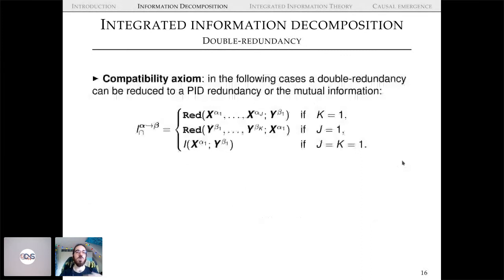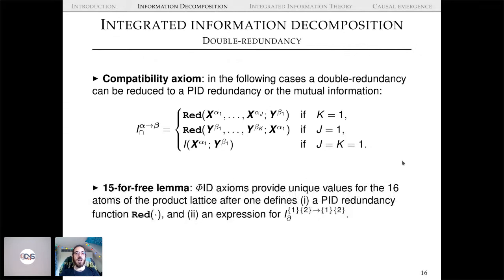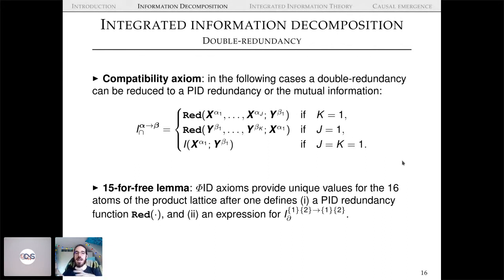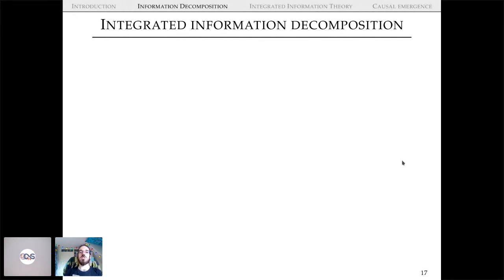The double redundancy function must satisfy a compatibility axiom: it reduces to a PID redundancy or mutual information in the relevant limits. We can prove a 'fifteen for free' lemma: just as in PID where giving me one atom lets me compute the other three for free, in Φ-ID, if we have a full PID, giving me one extra atom lets me compute the other 15 for free. Φ-ID is an underdetermined system with 16 unknowns and 15 equations.